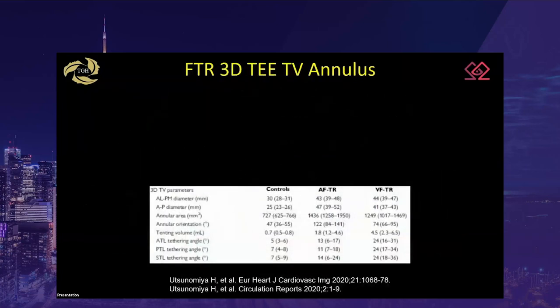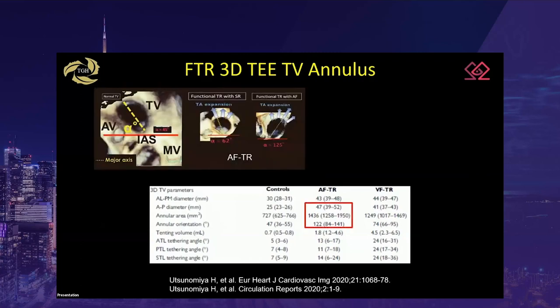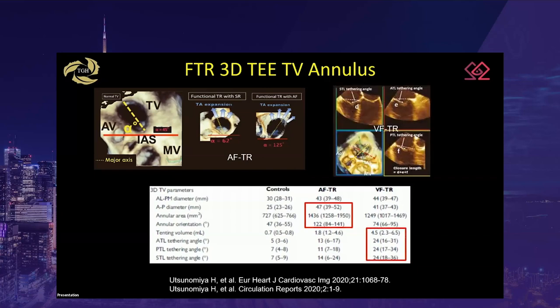Oots onomat compared parameters for atrial and ventricular related tricuspid regurgitation using 3D TEE. In atrial-related TR, 3D parameters showed a larger AP diameter, annular area, and annular orientation from a more dilated and posteriorly displaced annulus. In ventricular-related TR, tenting volume and all leaflet tethering angles were larger.